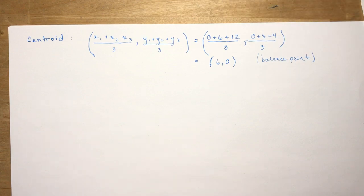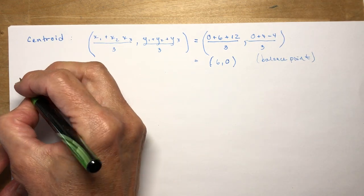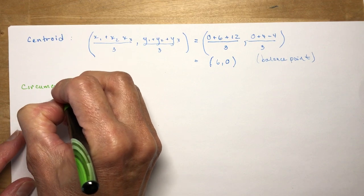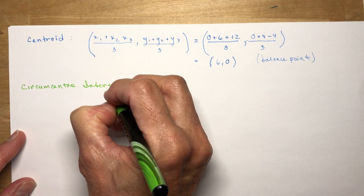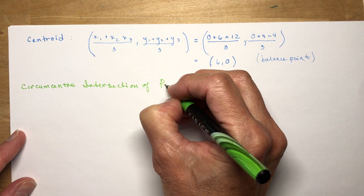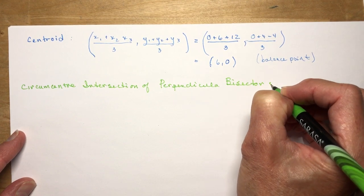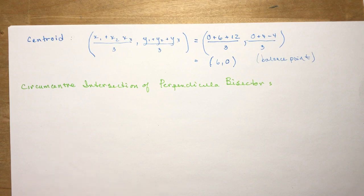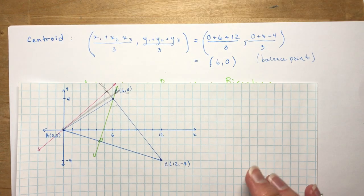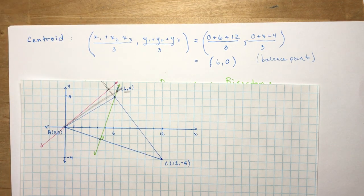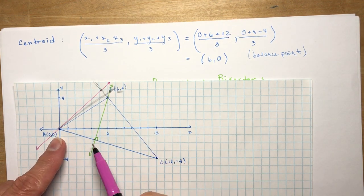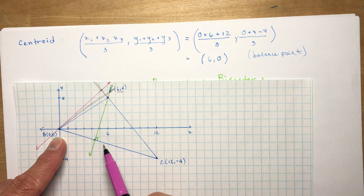Now we need to find the circumcenter, which is the center of the circle that passes through all three vertices. The circumcenter is the intersection of the perpendicular bisectors. A perpendicular bisector is perpendicular to a side and passes through its midpoint. Let's find the perpendicular bisector of AC first — I need its midpoint and the perpendicular slope.